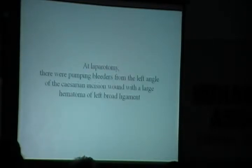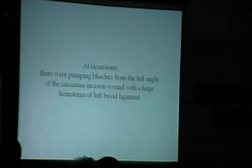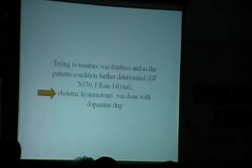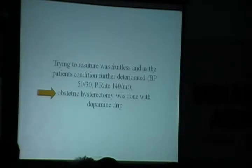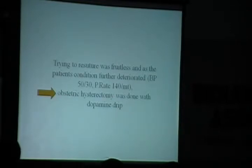Trying to control the bleeding was very difficult, and the patient's condition continued to deteriorate — BP was 50/30 even on dopamine, pulse rate 140. The anesthetist was not happy, and neither were we, because we wanted to save the patient. So I decided to proceed with hysterectomy. Being a multiparous patient, the relatives gave immediate consent. We performed the hysterectomy.